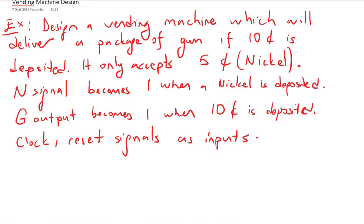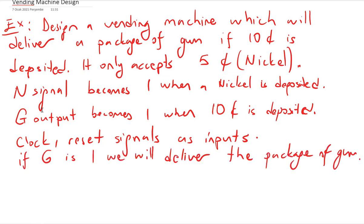In this example we will design a vending machine which will deliver a package of gum if 10 cents is deposited. It only accepts 5-cent coins and does not accept any other money. We have input signal n, which becomes 1 when a nickel is deposited, and output signal g, which becomes 1 when 10 cents is deposited — meaning we deliver the package of gum. We also have clock and reset signals as inputs.